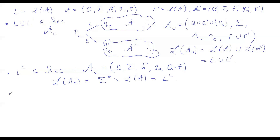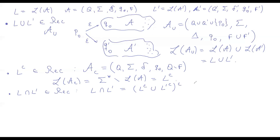For the intersection, to see that L intersect L' is recognizable, one approach is to simplify by applying De Morgan's rules: the intersection equals the complement of (complement-L union complement-L'), and we apply complement at the end. Since all of these operations — complement and union, and again complement — preserve the recognizable character of the languages, this indirect argument works.